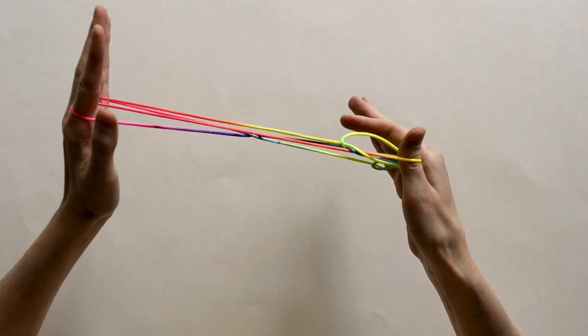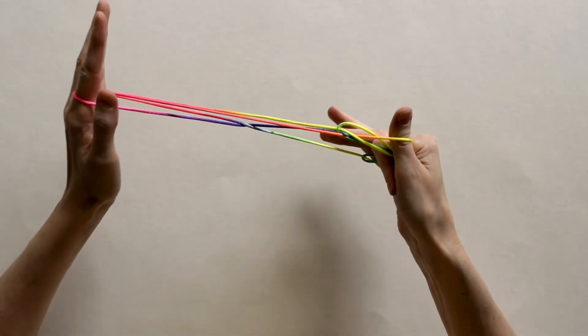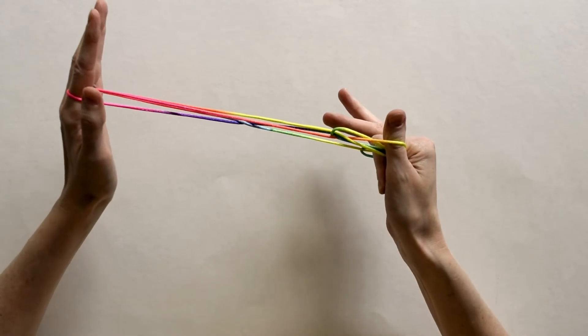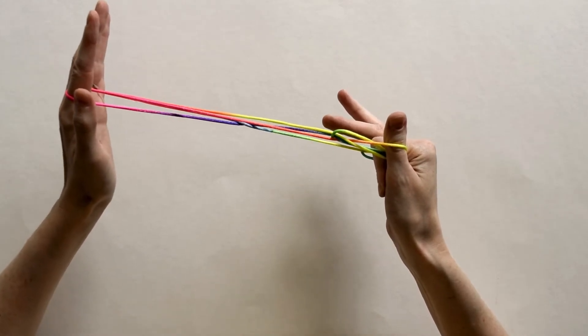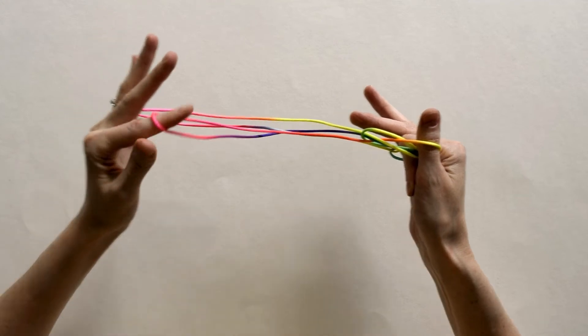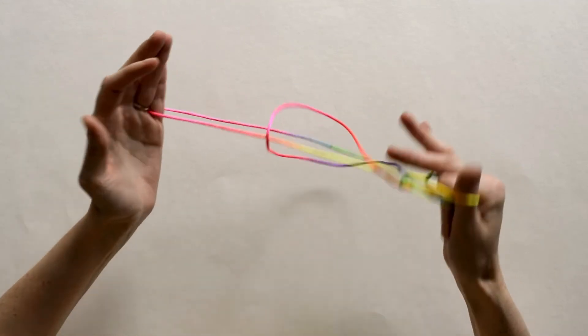Now I'm going to take my right index finger and just place it down. It doesn't really matter where, just hold those strings in place. Now I'm going to take my left index loop off.